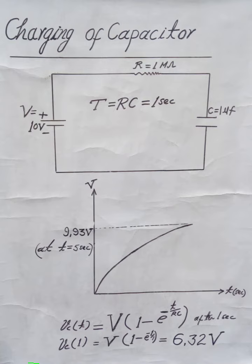After five time constants, when time T equals five seconds, the capacitor voltage VC equals 9.93 volts DC. Thank you.